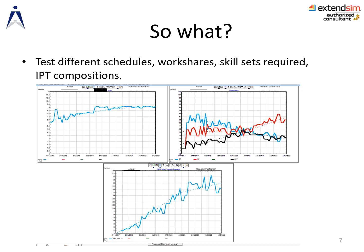The top left plot is the composition of one of the teams. The plot to the right-hand side shows the plots for capability partner, strategic partner, and integrated work partner over time. And the bottom plot shows the skill sets forecast demand over a five-year period.